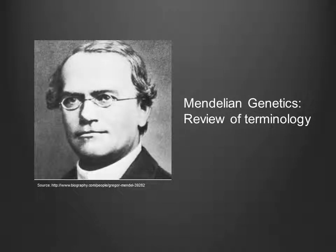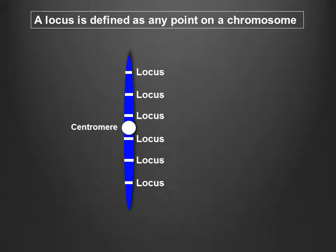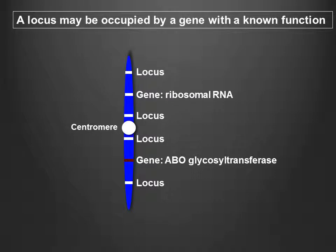In this video we will be reviewing several genetics terms that most or all of you are likely familiar with. First, we'll begin with a locus. A locus is simply any location on a chromosome. Loci may or may not be occupied by genes — hereditary units that determine an organism's traits.